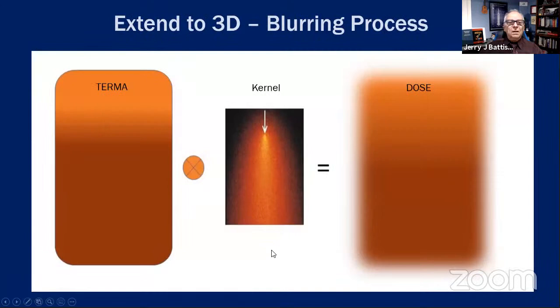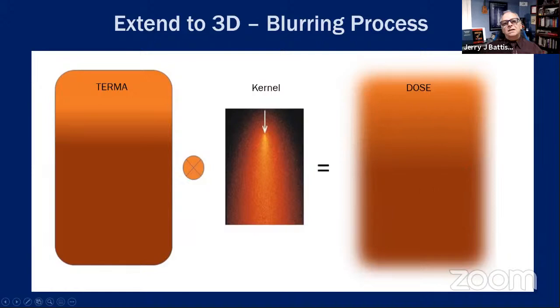The convolution process is basically a blurring process. The TERMA — or photon fluence intensity — convolved with the kernel adds a little fingerprint at each location and blurs the dose in tissue. There are some spoilers: beam rays are tilted due to divergence, beams are polyenergetic so you cannot use a monoenergetic photon kernel without averaging, and tissue inhomogeneities can mess up kernels derived for water only.